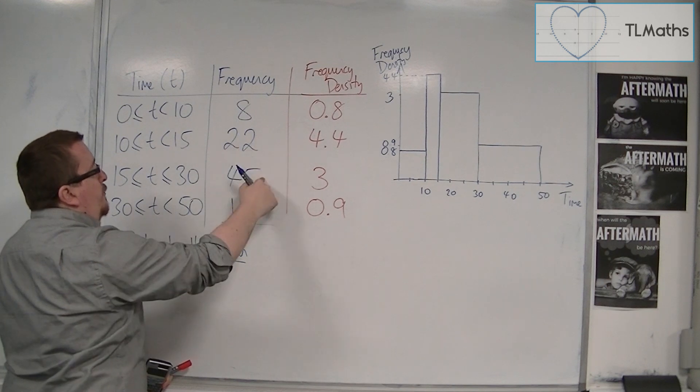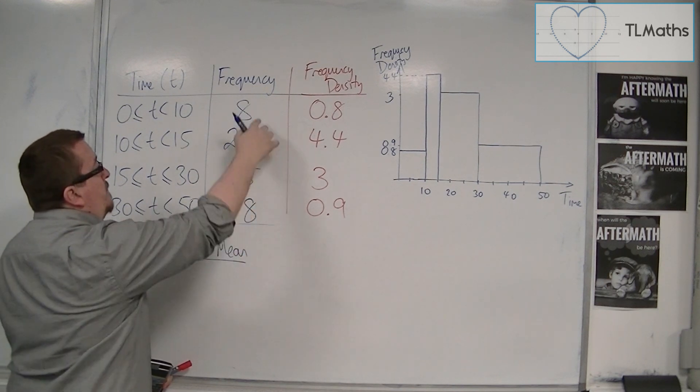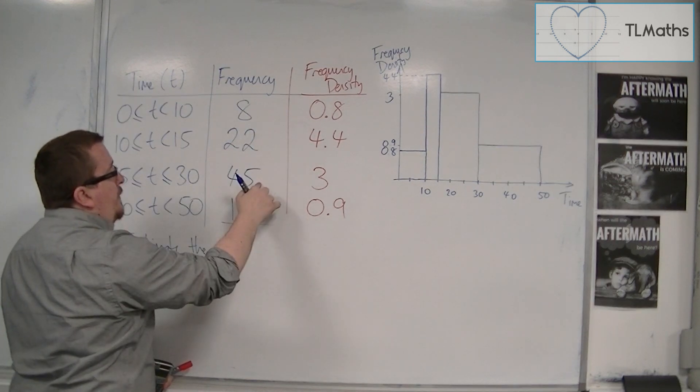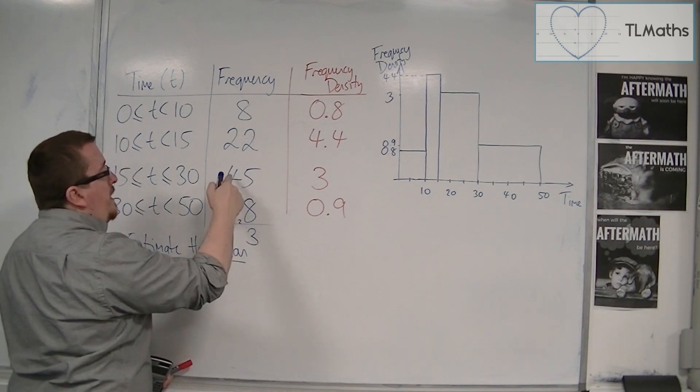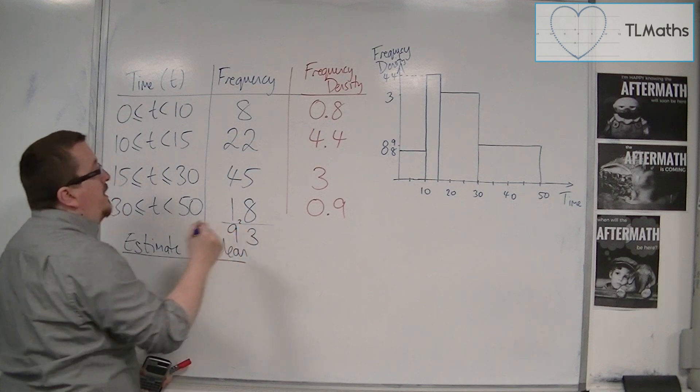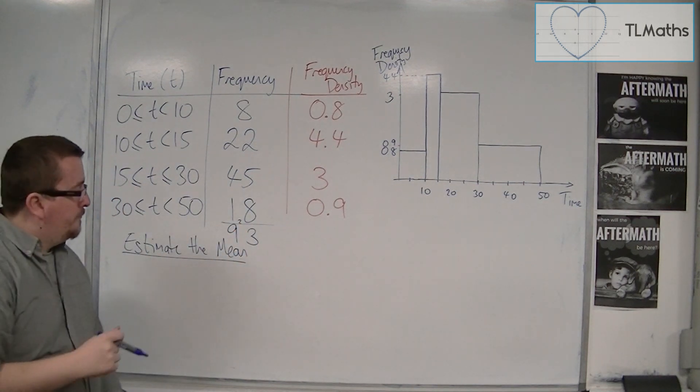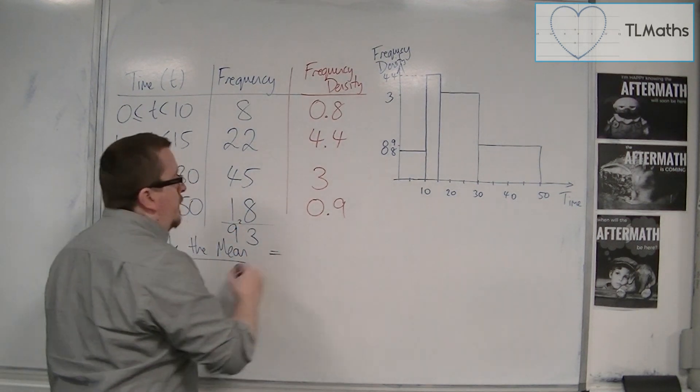So 8, 22, 45, and 18, I can add together. So 8 and 2 is 10, 15, 23, 3, 7, 8, 9. So 93 is my frequency.